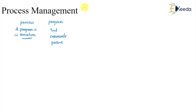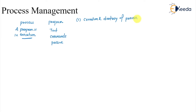Regarding process management, there are many different responsibilities. The first one is the creation and destruction of a process. Creating or destroying a process is one of the key tasks of process management.